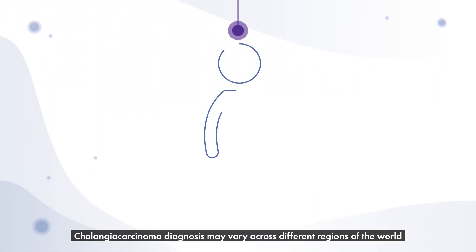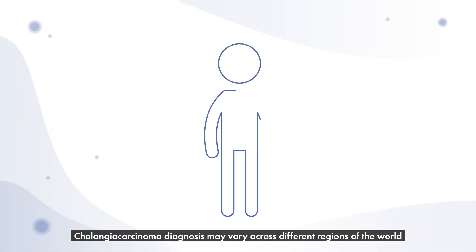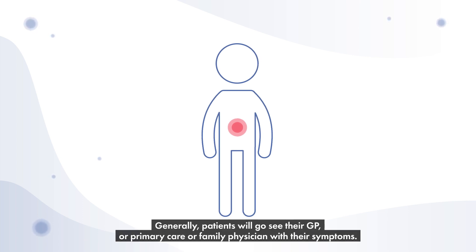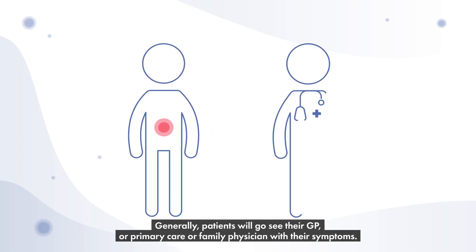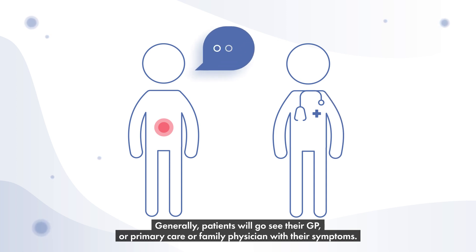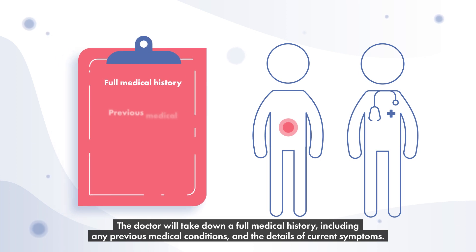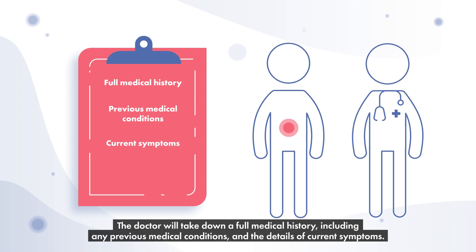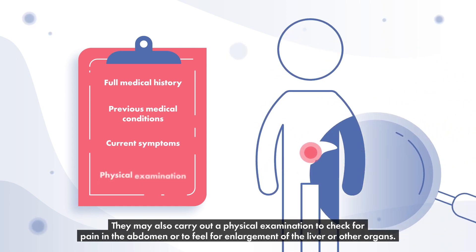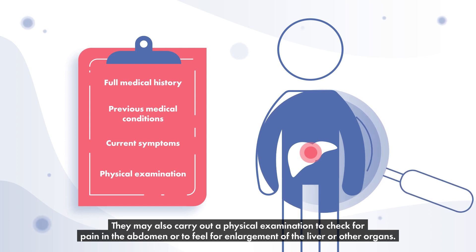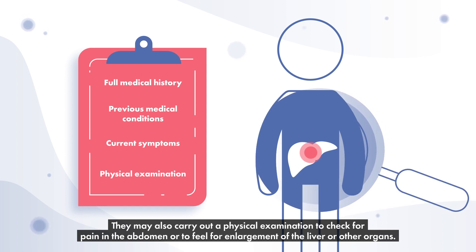Cholangiocarcinoma diagnosis may vary across different regions of the world and may include the following procedures. Generally, patients will go and see their GP or primary care or family physician with their symptoms. The doctor will take down a full medical history, including any previous medical conditions and the details of current symptoms. They may also carry out a physical examination to check for pain in the abdomen or to feel for enlargement of the liver or other organs.